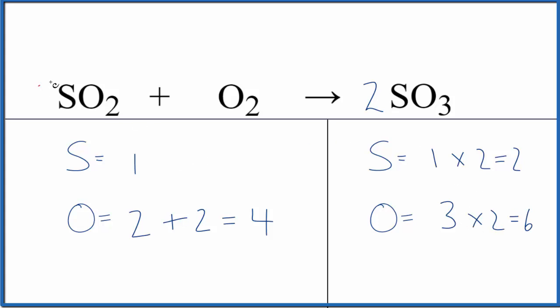On this side, I do need to put a two in front of the sulfur dioxide so I can balance the sulfurs. One times two, that'll give us two. Those are balanced. Let's update the oxygens. So we have two times two, that's four, plus two, that's six. Actually, this equation, it's balanced.